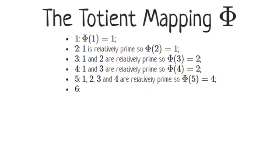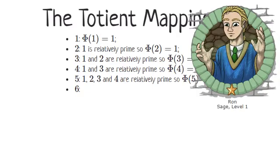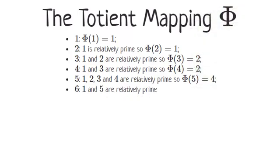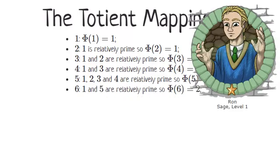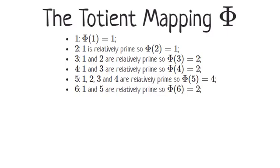Ron, have a go at calculating Phi of six. Okay, well, one is relatively prime to six, two isn't, three isn't, four isn't, five is. So one and five, so Phi of six is two? Absolutely correct. I'm pretty good at this.